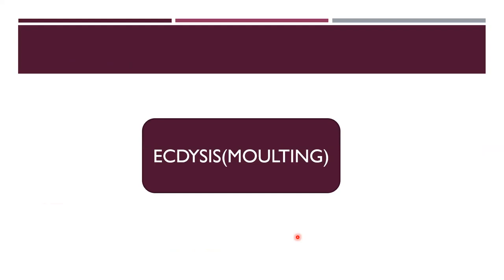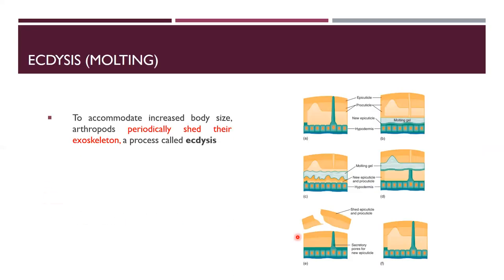Now we are moving towards ecdysis and molting. Ecdysis is the process of periodically shedding the exoskeleton and replacing it. It is necessary for insects because the exoskeleton limits growth.